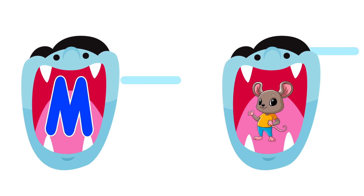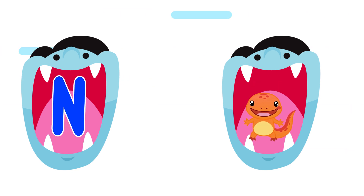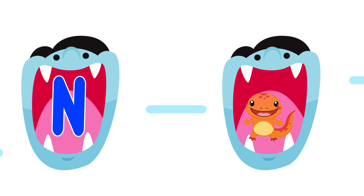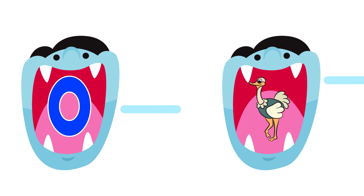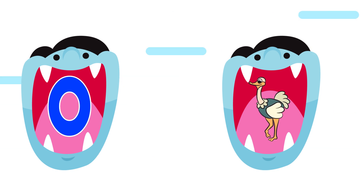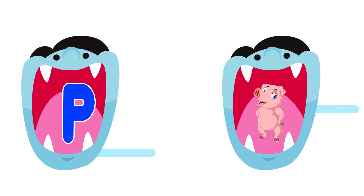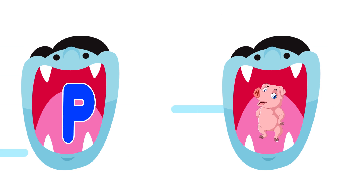M is for mouse. Mouse, mouse, mouse. N is for newt. Newt, newt, newt. O is for ostrich. P is for pig. Pig.